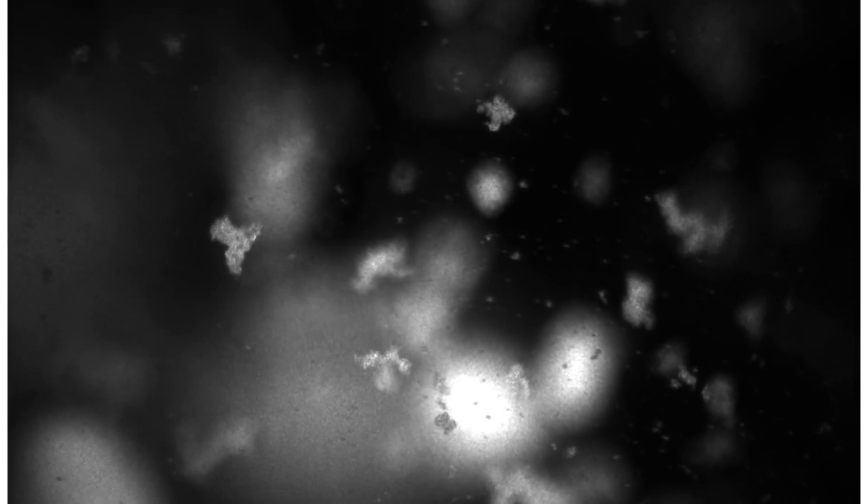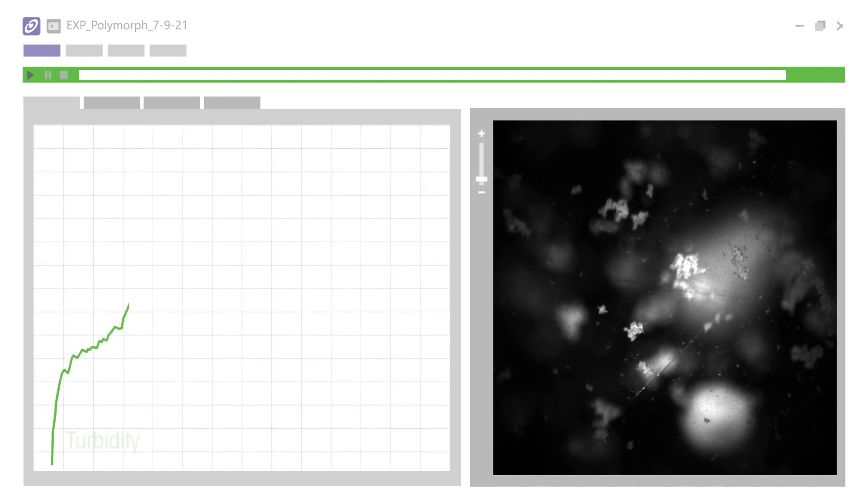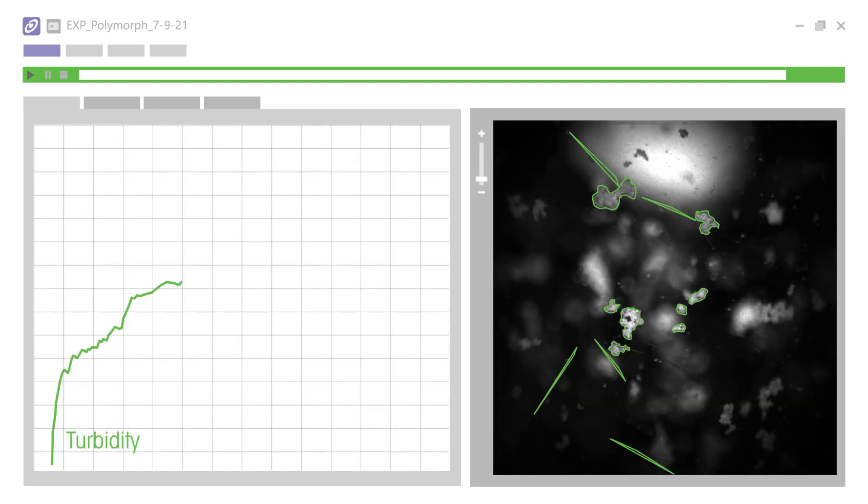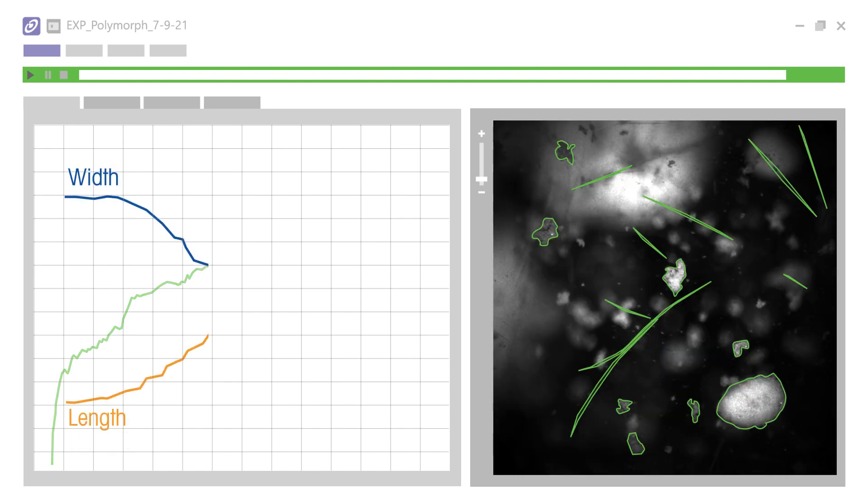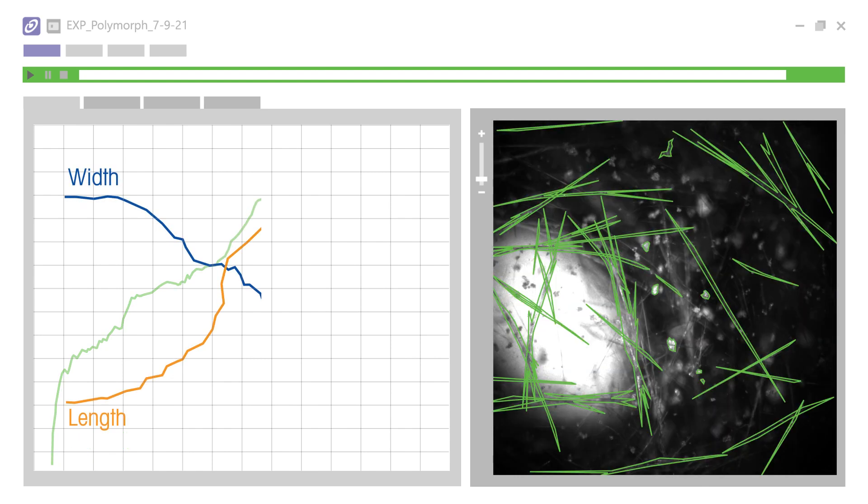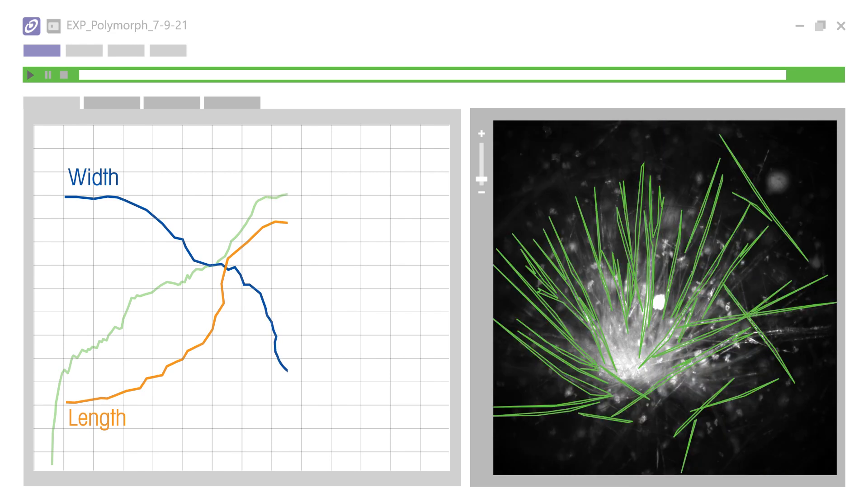EasyViewer provides an immediate understanding of particles as they naturally exist in process with submicron resolution. EasyViewer's turbidity trend is highly sensitive to system changes, and real-time image analysis measures particle size to track growth and shape changes that are impossible with offline techniques.